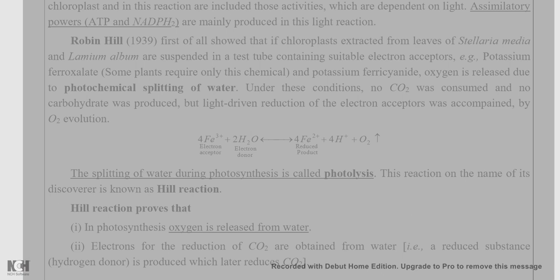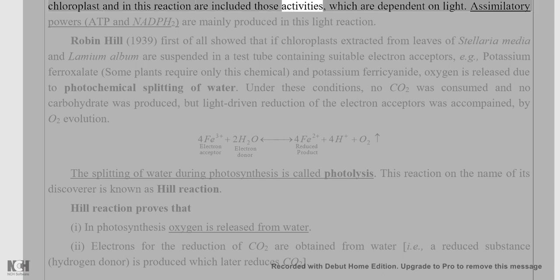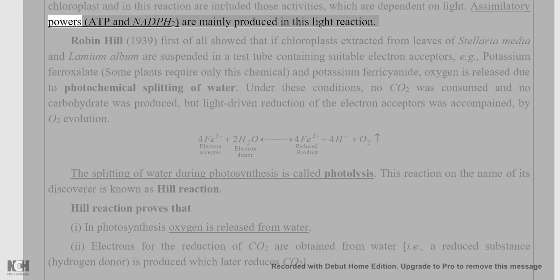The light phase or photochemical reactions occur in the grana fraction of chloroplasts. This reaction includes all activities that are dependent on light. Assimilatory powers — ATP and NADPH2 — are mainly produced in this light reaction.